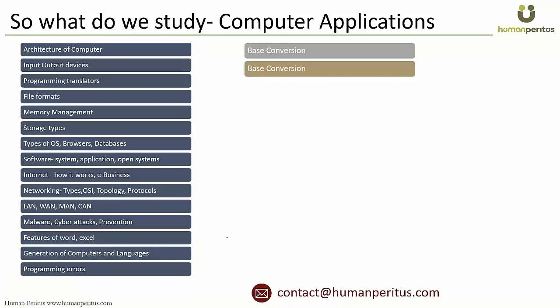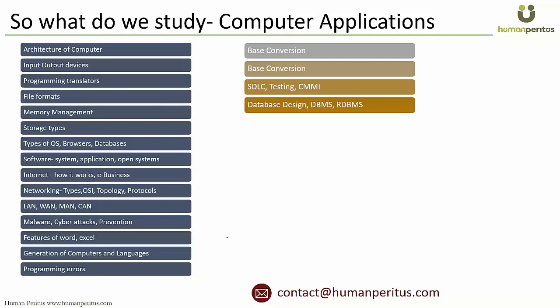Go through the entire software development process: SDLC, Waterfall model, V-shaped model, Prototyping, RAD, and Agile programming. Also go through different types of testing — at least alpha testing, beta testing, and similar main types. Cover what CMMI (Software Capability Maturity Model) is. Also look at database design, DBMS, RDBMS, and relational databases.